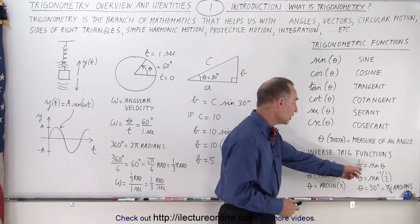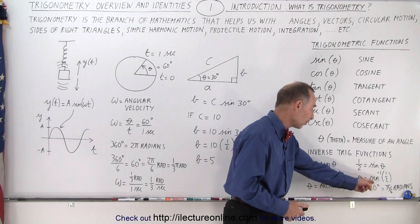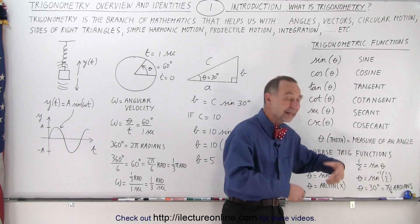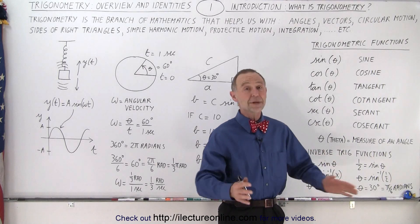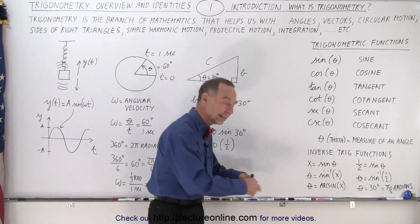For example, if one half equals the sine of theta, then theta equals the inverse function of sine of one half, and we can calculate what that angle is. Right now you may not know yet what that means and how to do that, but that will come later.